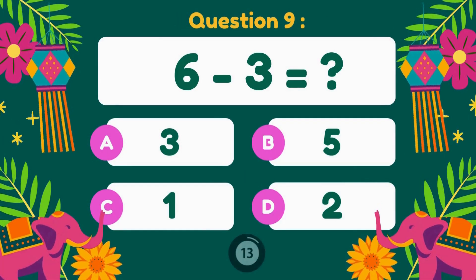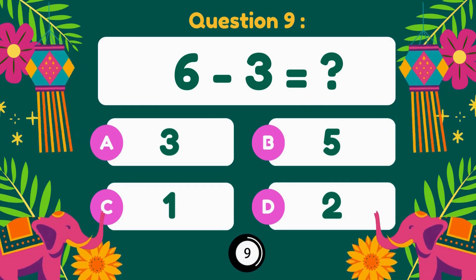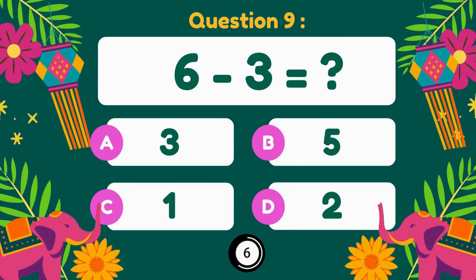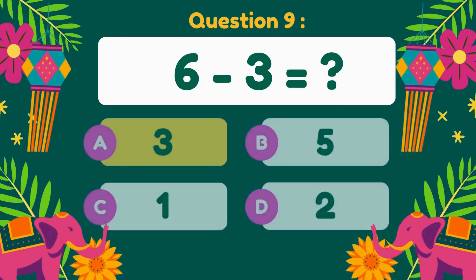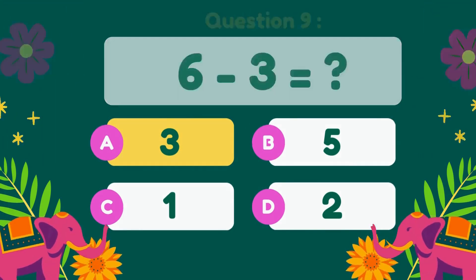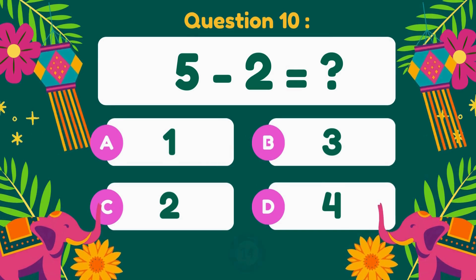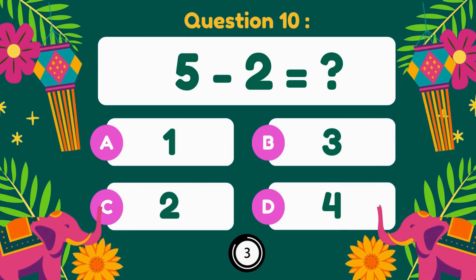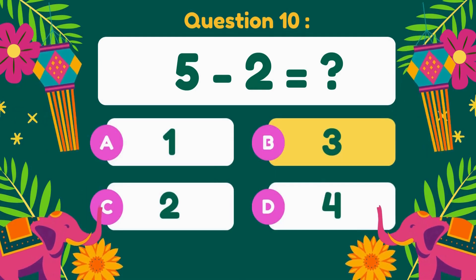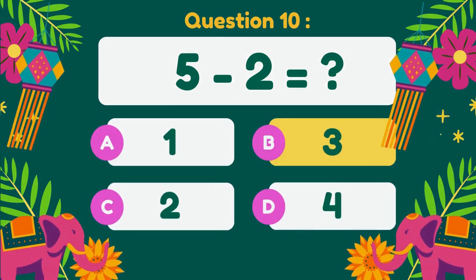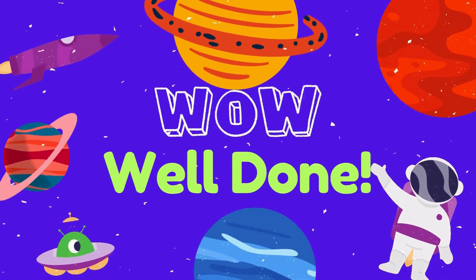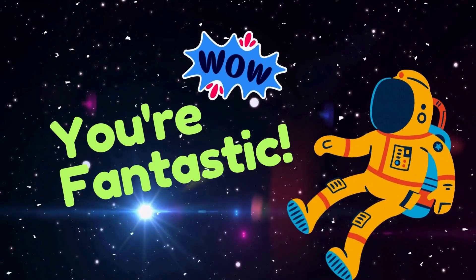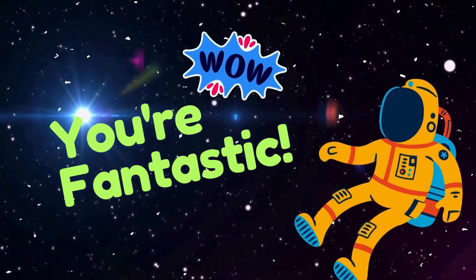6 minus 3. 6 minus 3 equals 3. 5 minus 2. 5 minus 2 equals 3. Wow, well done! You are fantastic!